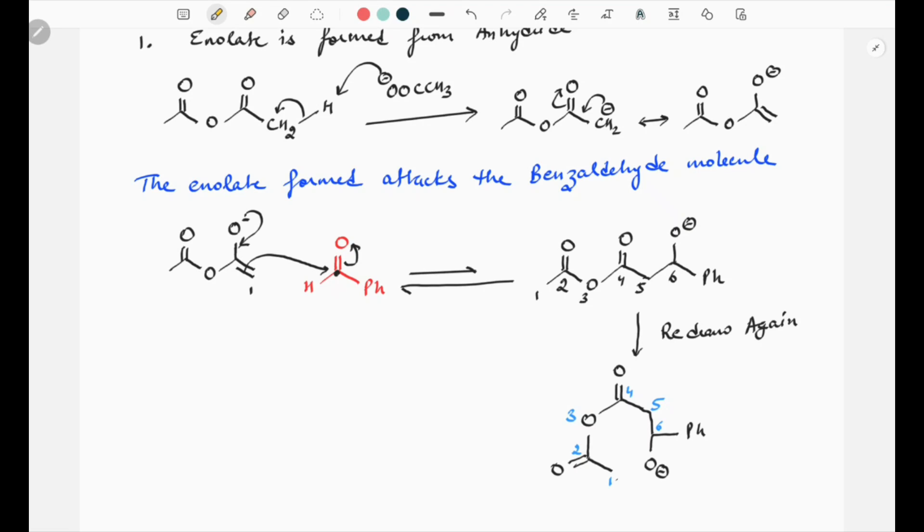Now this oxygen which has a negative charge attacks that carbonyl carbon which is number 2, and the electron density is shifted again towards oxygen. Once again, this numbering will help you to write the final product.